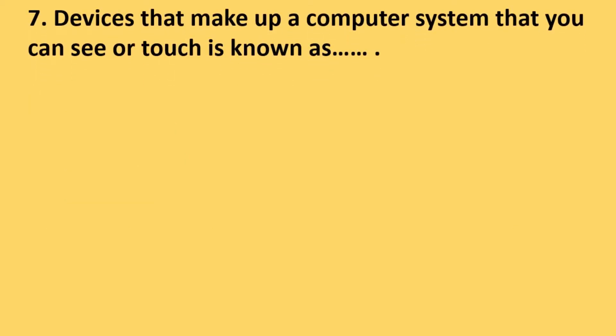Question number 7: Devices that make up a computer system that you can see or touch is known as - options are menu, print, software and hardware. The correct answer is option D, hardware.